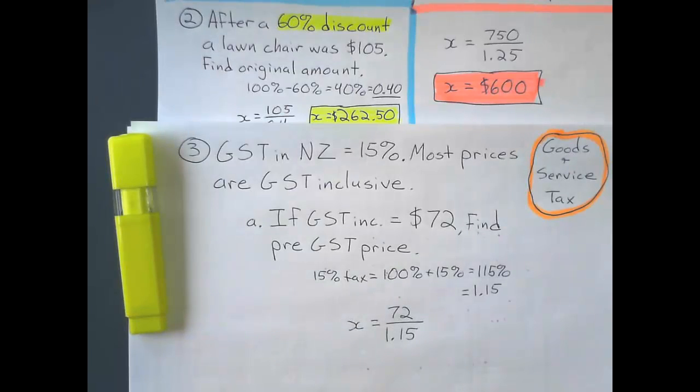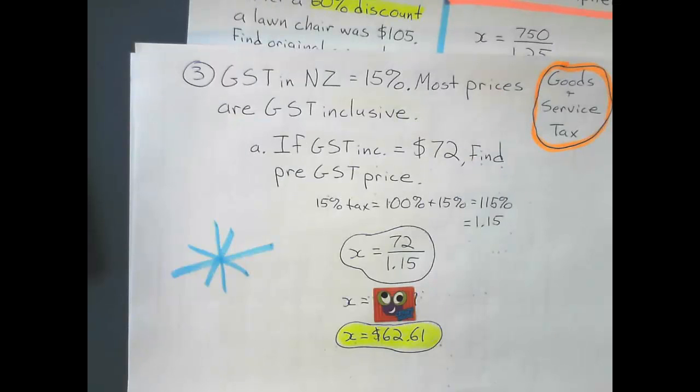So does that mean that any time I find the pre-GST price, I divide by 1.15 in New Zealand? Yes, we do, because it's 15% no matter what you're purchasing. So we get a pre-tax price of $62.61.